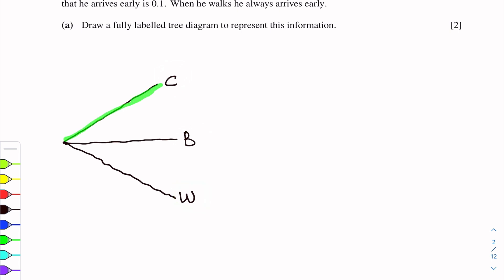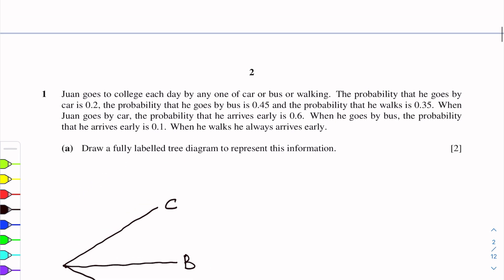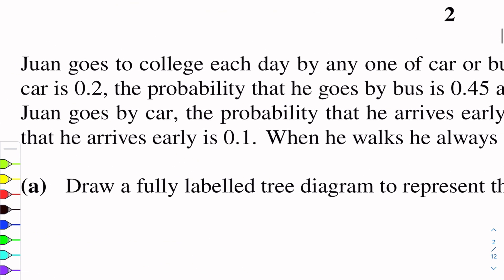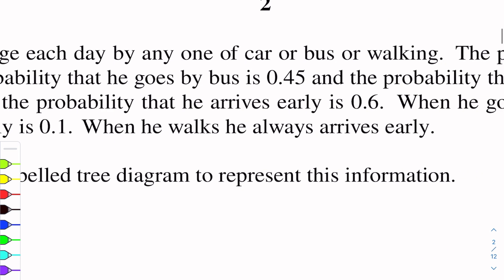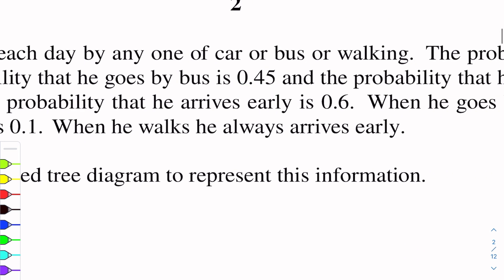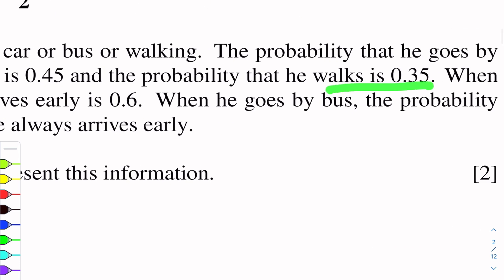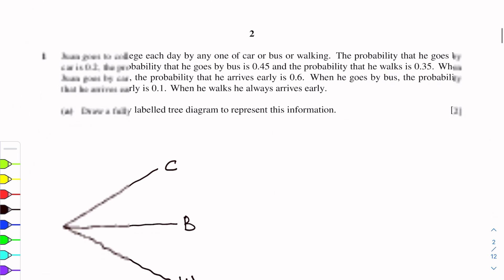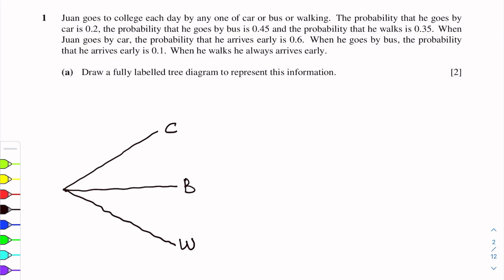Now we will write here the probabilities. The probability of going by car is 0.2, the probability of going by bus is 0.45, and the probability of walking is 0.35.